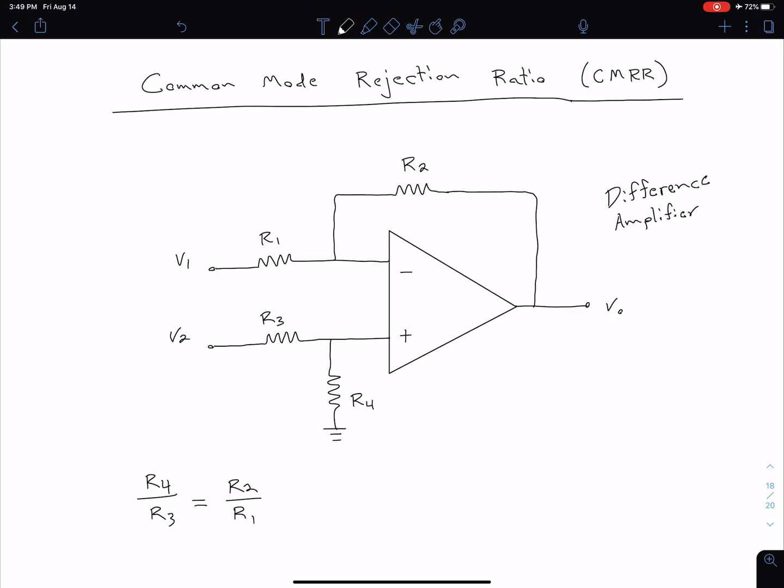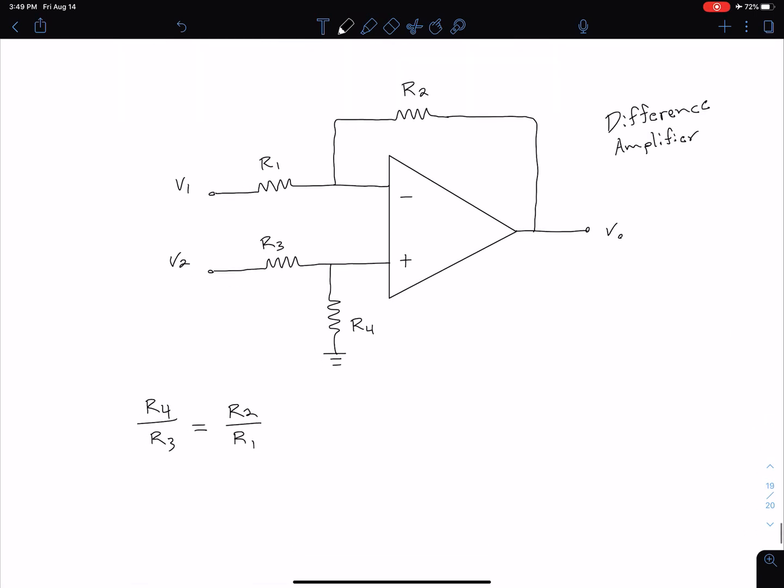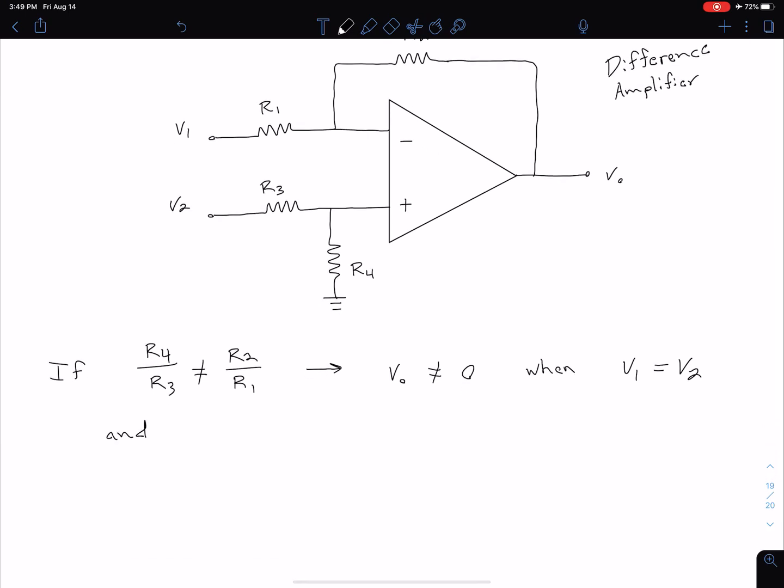We're not necessarily always going to have that ideal case, so let's take a look at how we can quantify how far off ideal the amplifier is. We're going to do that with something called the common mode rejection ratio or CMRR. What if these resistor ratios are not equal? That would mean our output voltage is not going to be equal to zero when our two inputs are equal to one another, so when V1 equals V2 we will have some non-zero output and we're going to have some common mode gain as a consequence.